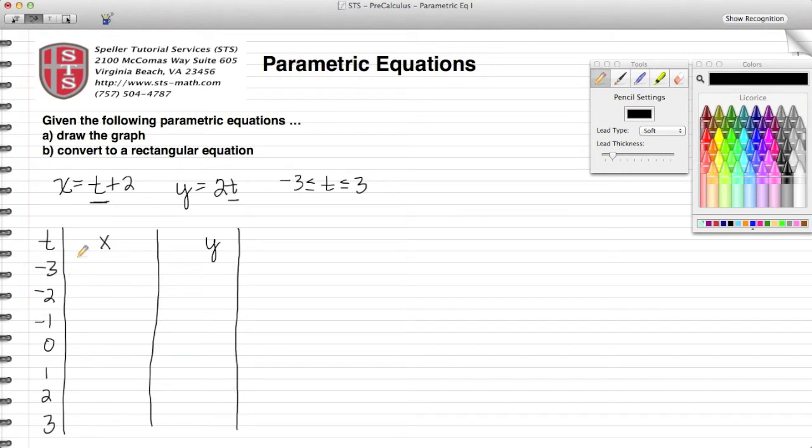Simply stated, all you have to do is substitute in the values of t into each equation. Let's begin with X. If I substitute in a negative 3, I'm going to end up with the expression negative 3 plus 2, and that resolves to negative 1. Then if I do the next value of t for just the X, negative 2 plus 2 gives me 0. Negative 1 plus 2 gives me positive 1. 0 plus 2 gives me 2, and if I continue down, my answers are going to be 3, 4, and 5.